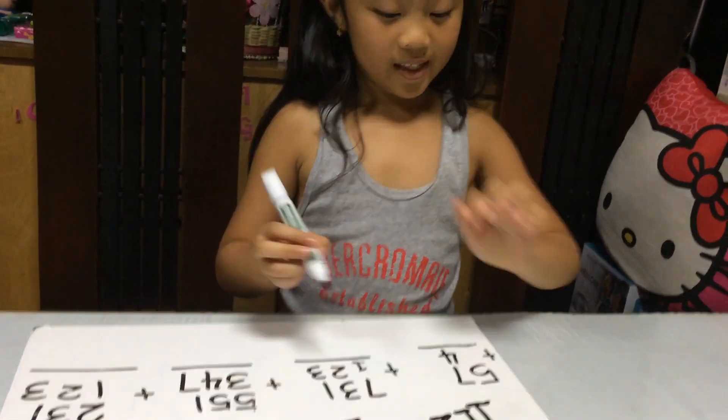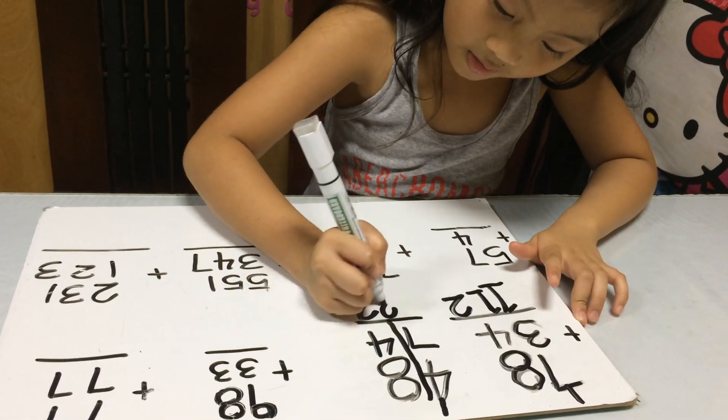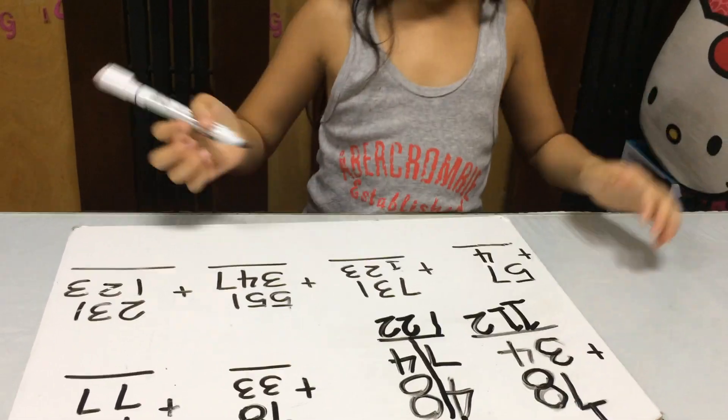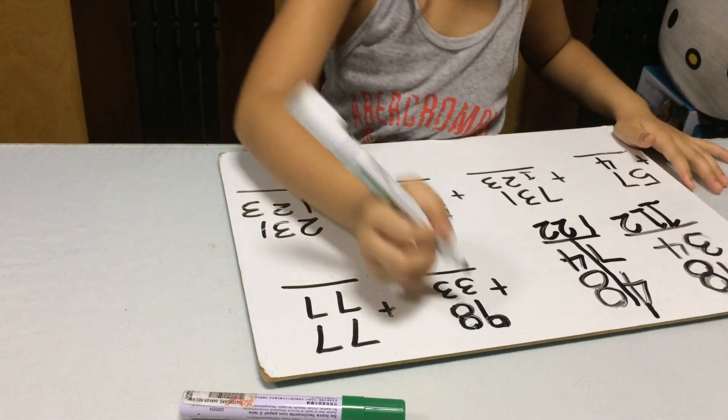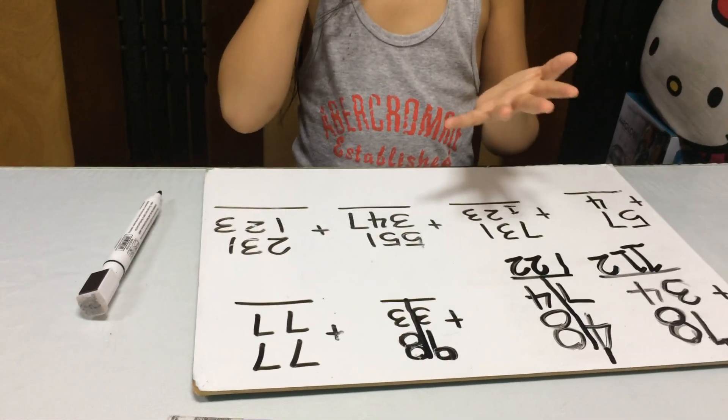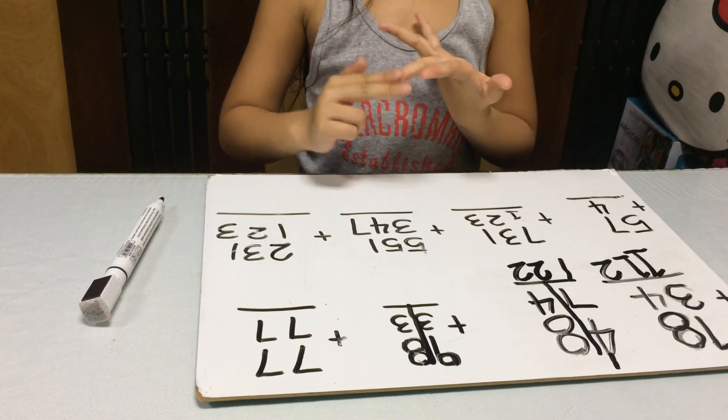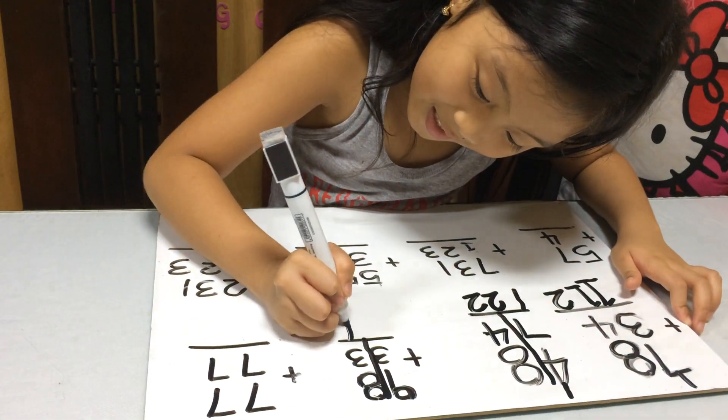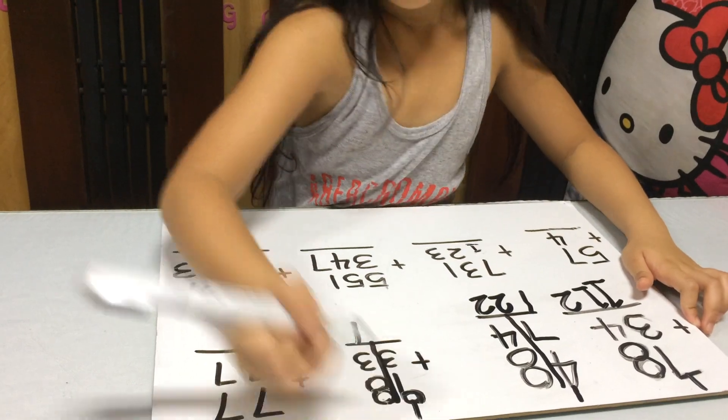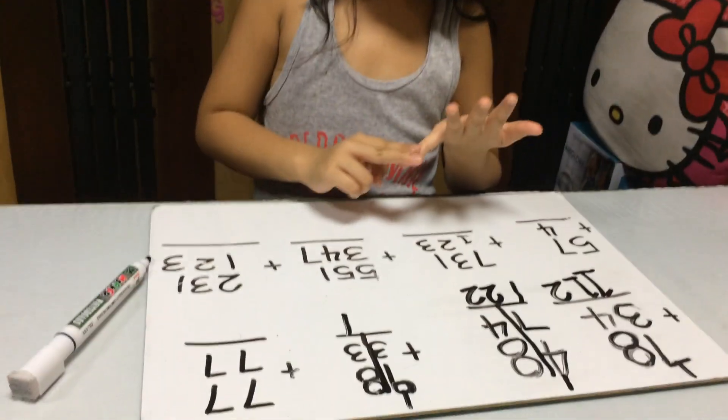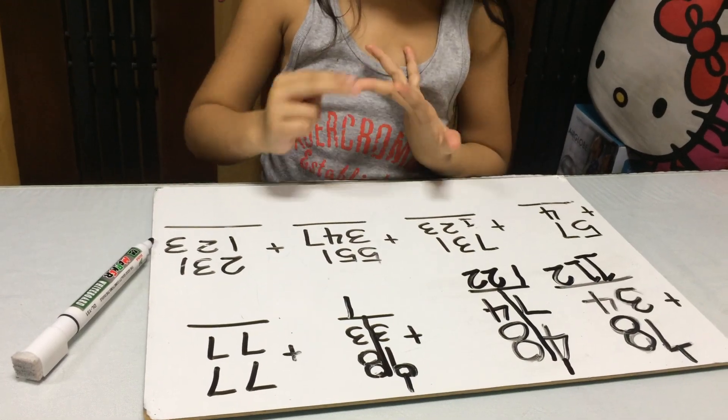Okay. Put the 2 and put the 1. Okay. Next. 8, 9, 10, 11. Put the 1 and put the 1 there. Okay. 9, 10, 11, 12, 13.